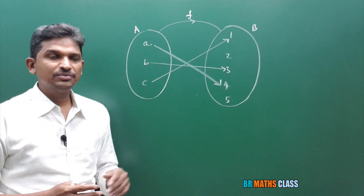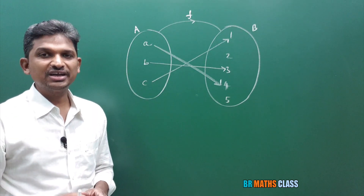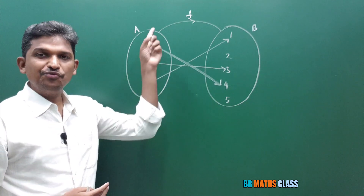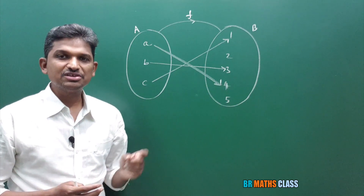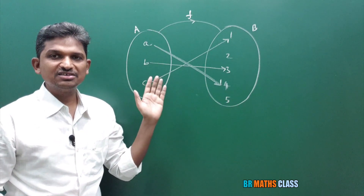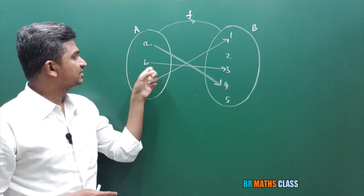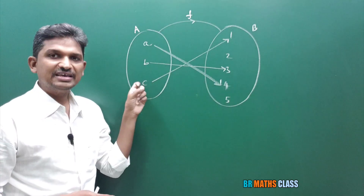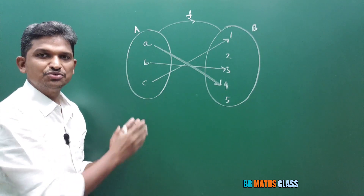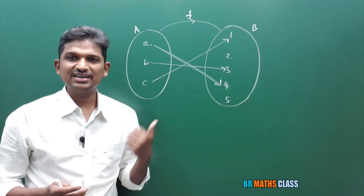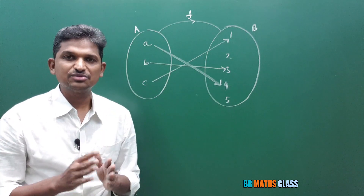Observe this diagram. There is a relation f from A to B. Is this relation a function or not? The definition of function: for every element in set A, there exists only one element in set B. In simple words, every element in set A is used, and it is used only once. Then we say it is a function. Here, a is used only once, b is used only once, c is used only once. So every element is used exactly once, hence it is a function.